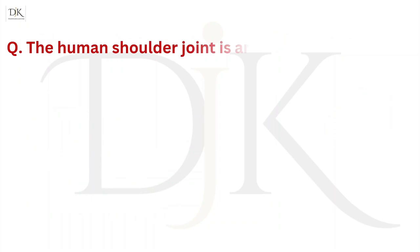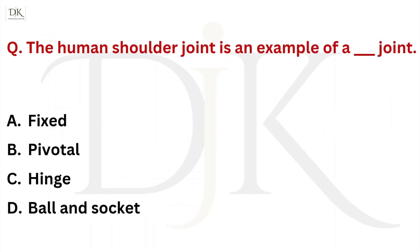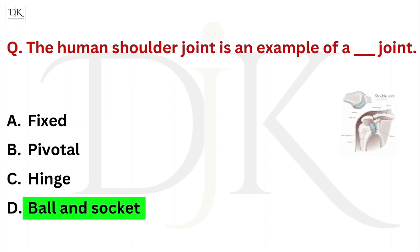The human shoulder joint is an example of which type of joint? Right answer is ball and socket.